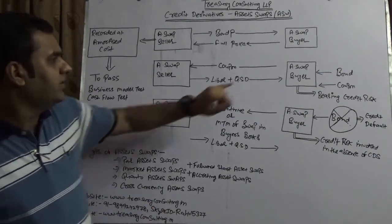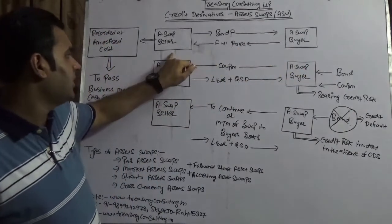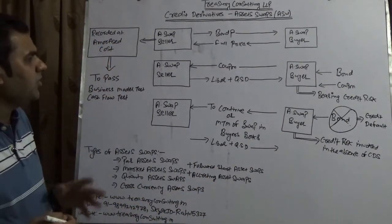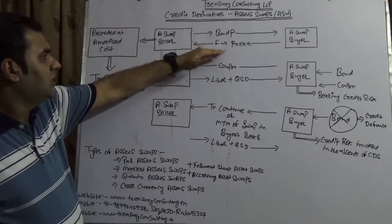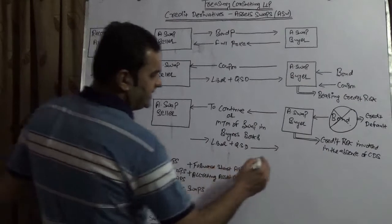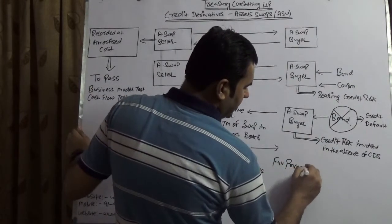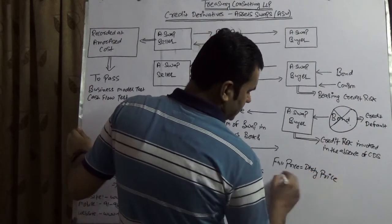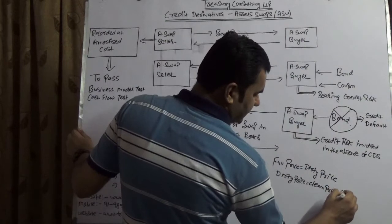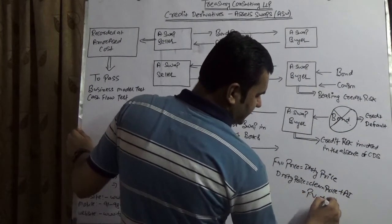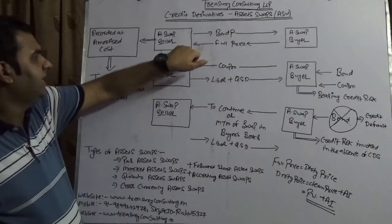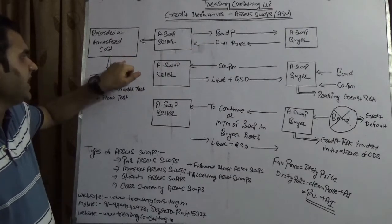In this structure, we have an asset swap buyer and an asset swap seller. The asset swap buyer is paying a full price to the asset swap seller and is getting a bond. The full price is also known as the dirty price. Dirty price equals clean price plus accrued interest, which is the present value of today plus accrued interest. He is paying full price and getting a bond with the value of P, which can be amortized in the books.